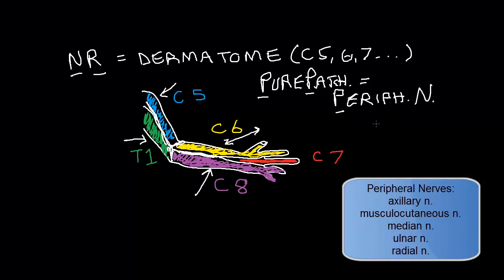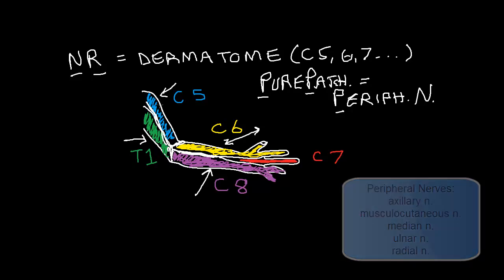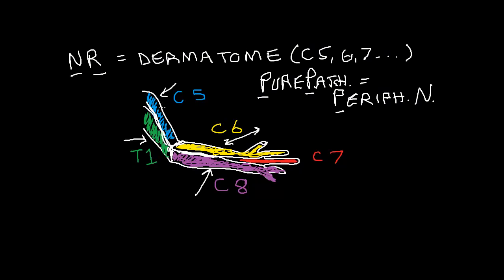We've got the axillary nerve, and I'll do these all in white so they stand out. Actually, let me take a color like this pink. I think that'll work. The axillary nerve pure patch overlies C5 dermatome on the lateral forearm. That's axillary.